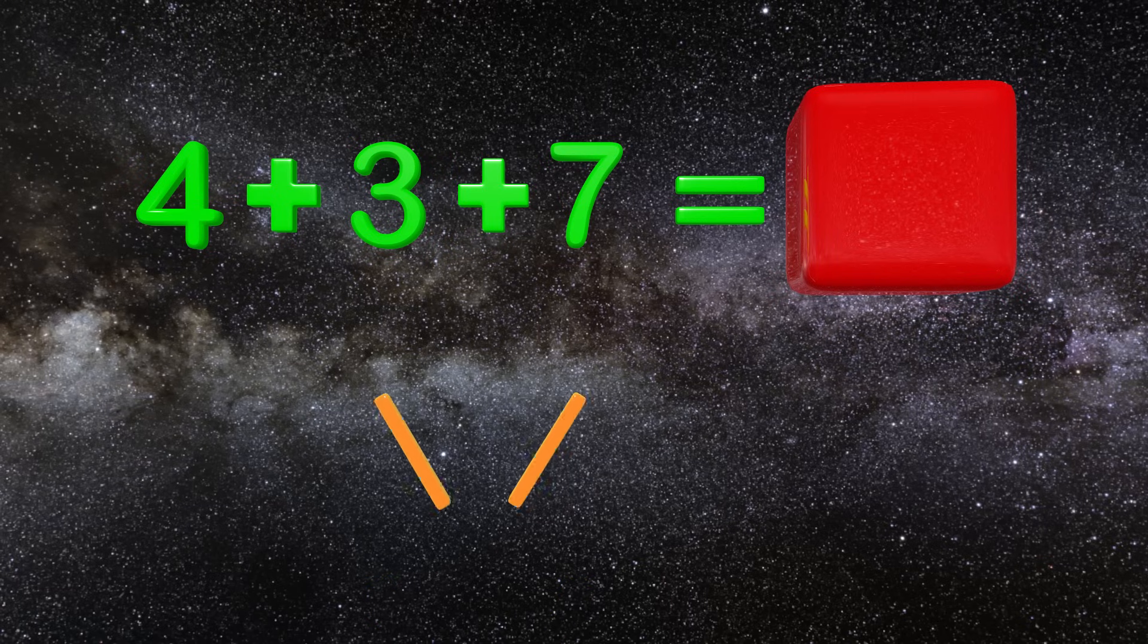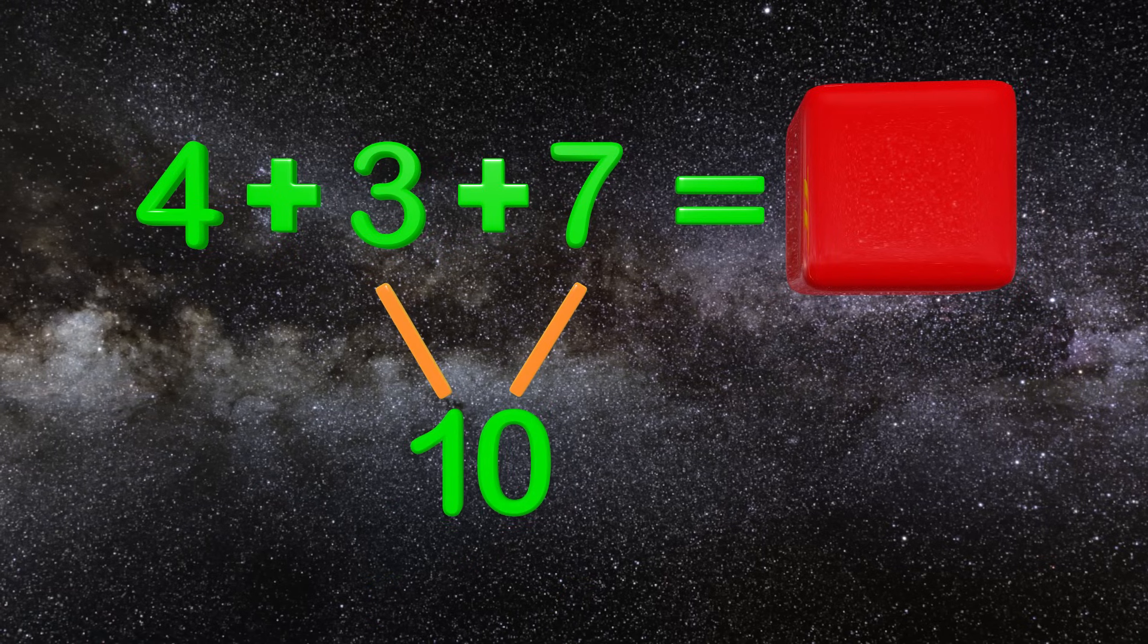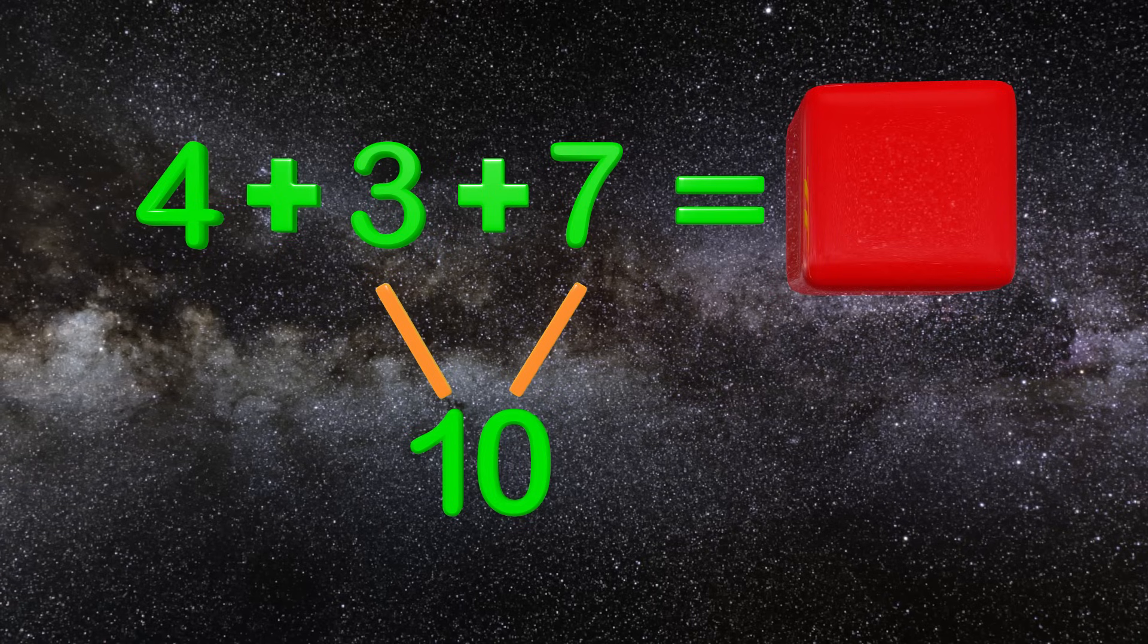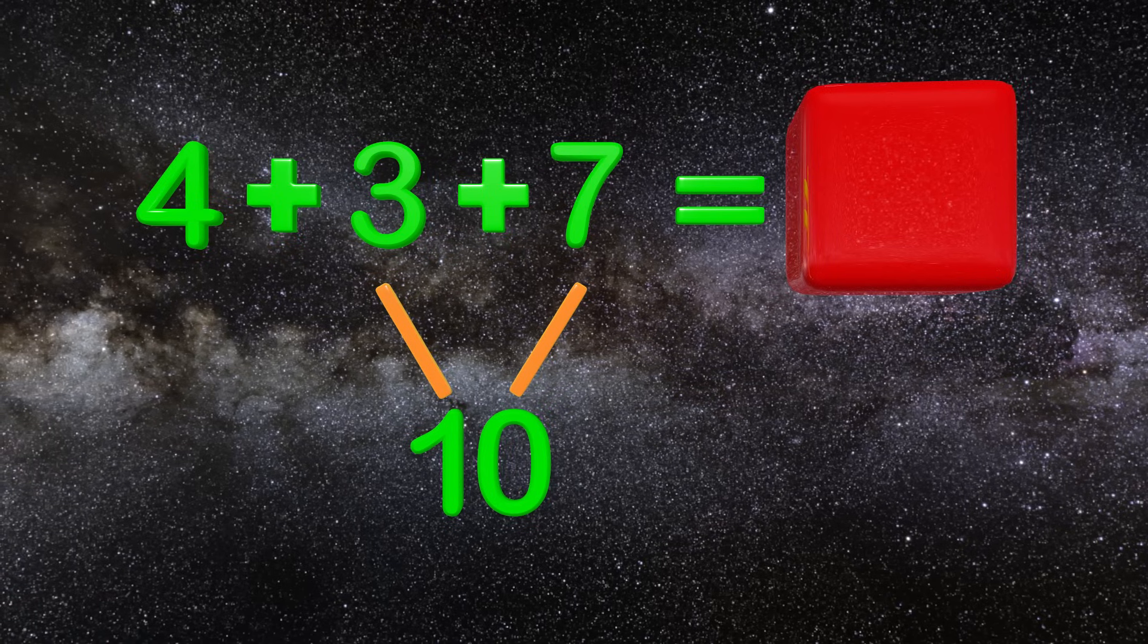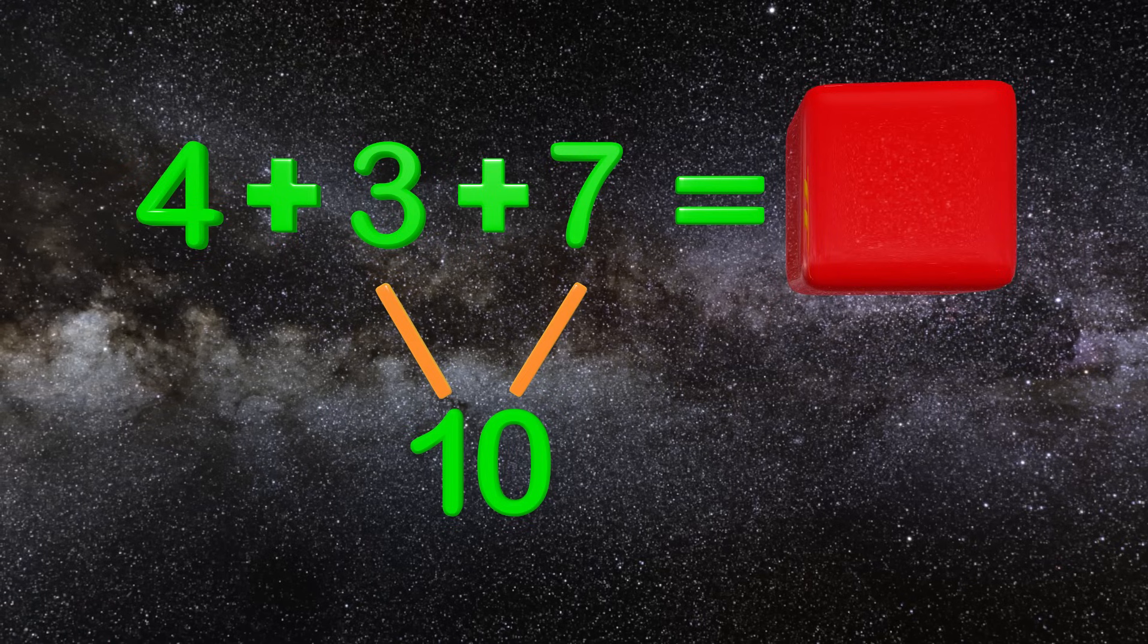If we add the 3 and 7 together we get 10. Many of us have memorized partners of 10. Two numbers that add up to 10 like 5 and 5 or 6 and 4 are partners of 10.